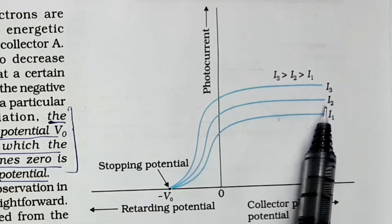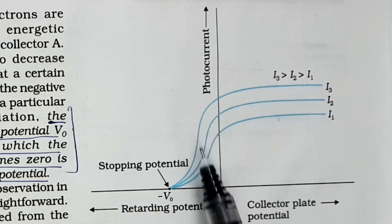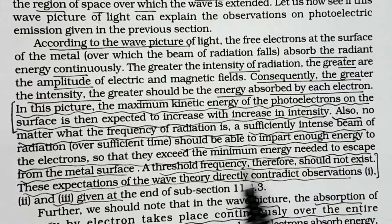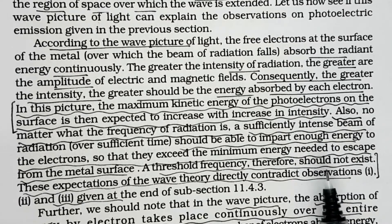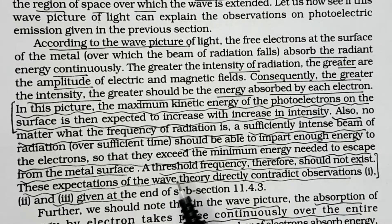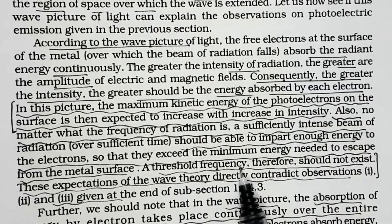We observed that if we increase the intensity, the stopping potential remains the same. The same stopping potential means that the kinetic energy of the emitted electrons is the same. According to wave theory, energy is continuously absorbed by the surface slowly. It will accumulate enough energy over time to emit an electron. In this way, there should not be a minimum frequency in wave theory, but we observe a threshold frequency in the photoelectric effect.